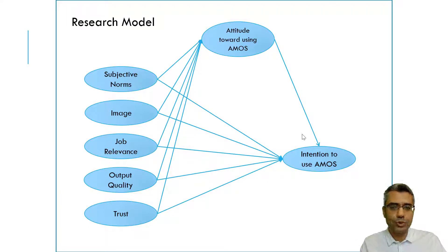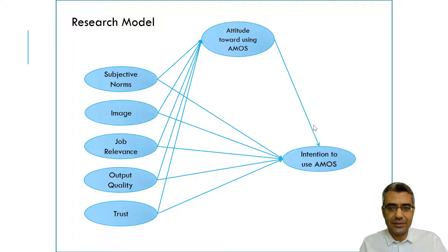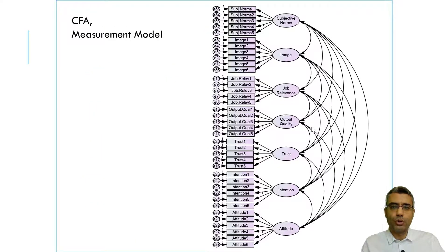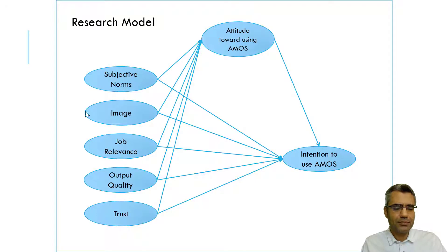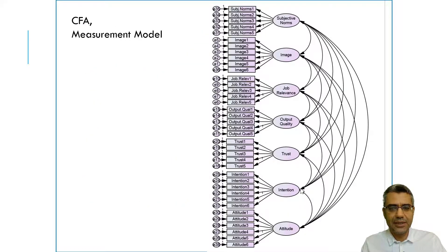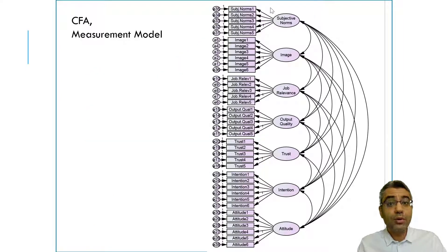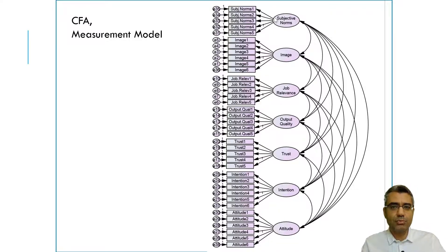After data cleaning, what we need to do is test the measurement model. This is called CFA, or Confirmatory Factor Analysis. You need to draw the model like this — all seven factors are here. The five independent constructs are shown, along with the mediator attitude and intention. All constructs in the model have been included in the CFA, along with their items. For example, subjective norms have been measured with five questions.